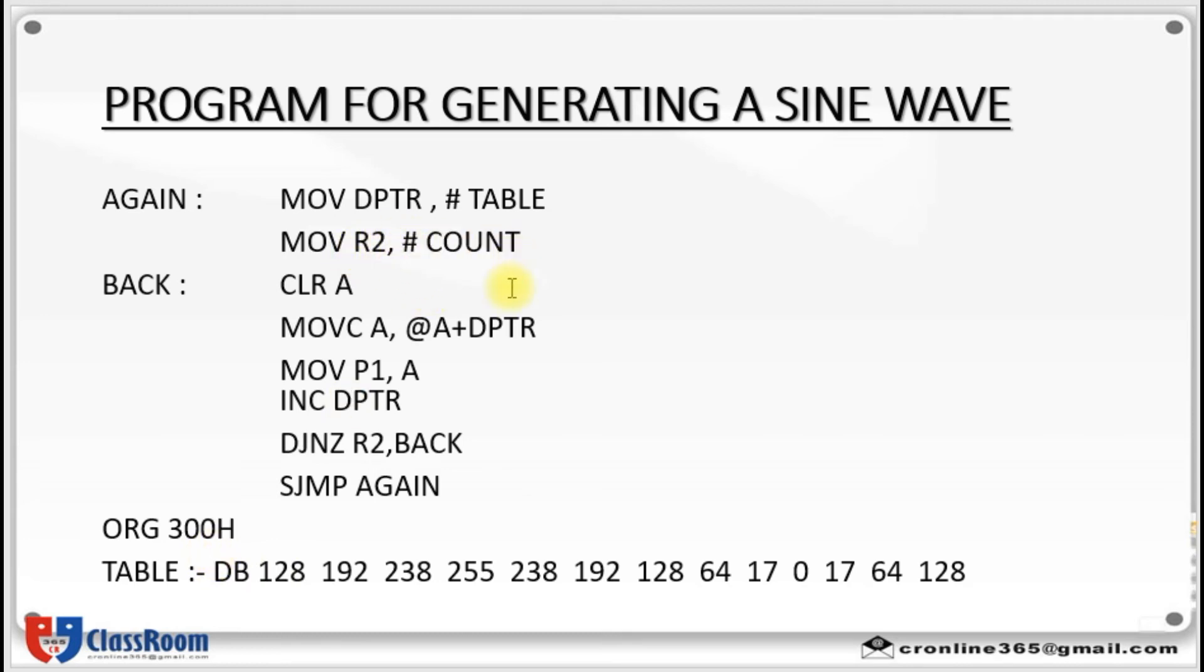Then move r2 comma hash count. This count value will be initialized in register 2. Then first the accumulator is cleared. Then move c a comma at a plus dptr. That is 0 plus dptr value 300. That is at 300 will be pointing this value 128. That value is moved to accumulator. Then that value you have to move to p1, because in the port p1 we have connected your digital inputs.